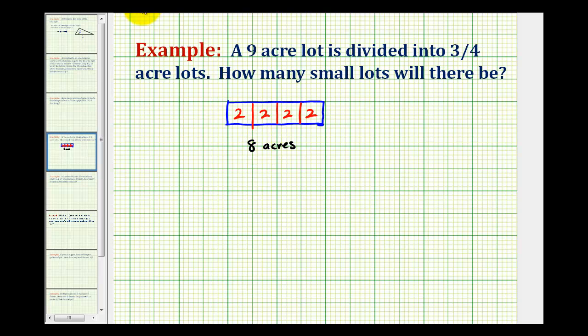So mathematically what we're doing is we're taking the total of eight acres and dividing it by the size of the smaller lots, in this case two, giving us a total of four two acre lots.